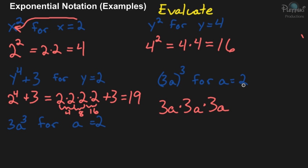And now we're going to substitute the 2 in for the a, because we're evaluating for a equals 2. So it's 3 times 2 times 3 times 2 times 3 times 2. And 3 times 2 is 6. So you have 6 times 6 times 6. And when we multiply those together, we'll get our answer.